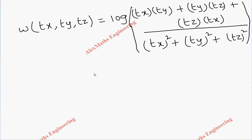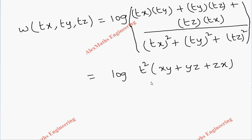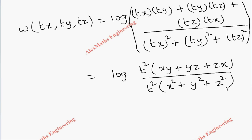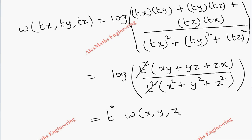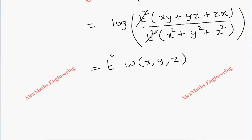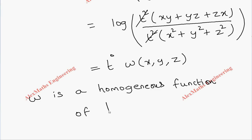In every term of the numerator there is t², which can be taken out as common, giving (xy + yz + zx). In the denominator we also take t² common, giving x² + y² + z². The t² cancels. Since there is no t term remaining outside, we write it as t⁰ · w(x, y, z). It is clear that w is a homogeneous function of degree n = 0.